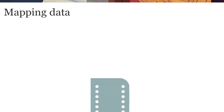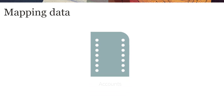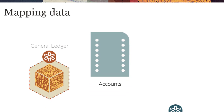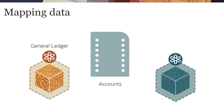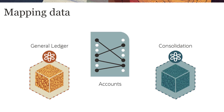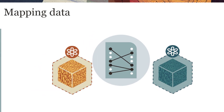Mapping is the process of defining relationships between dimensions of source and target applications that share data. For example, it is customary to map general ledger accounts to consolidation accounts for financial reporting purposes.